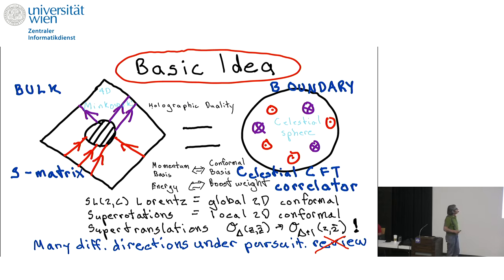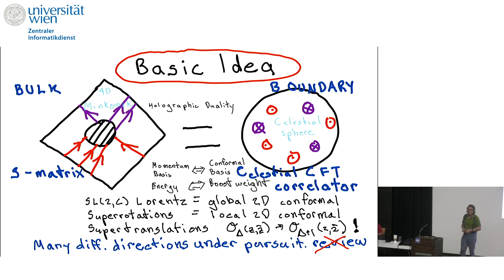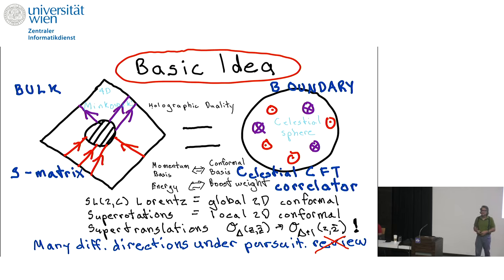This takes the form of a correlator in a conformal theory on the sphere. Why would we want to do this? Well, one hope is that this will be the sought-after holographic dual representation of physics in flat space. We've learned in the last 25 years an incredible amount about holography in anti-de Sitter space, but we don't have a clear idea of what holography in flat space should look like.